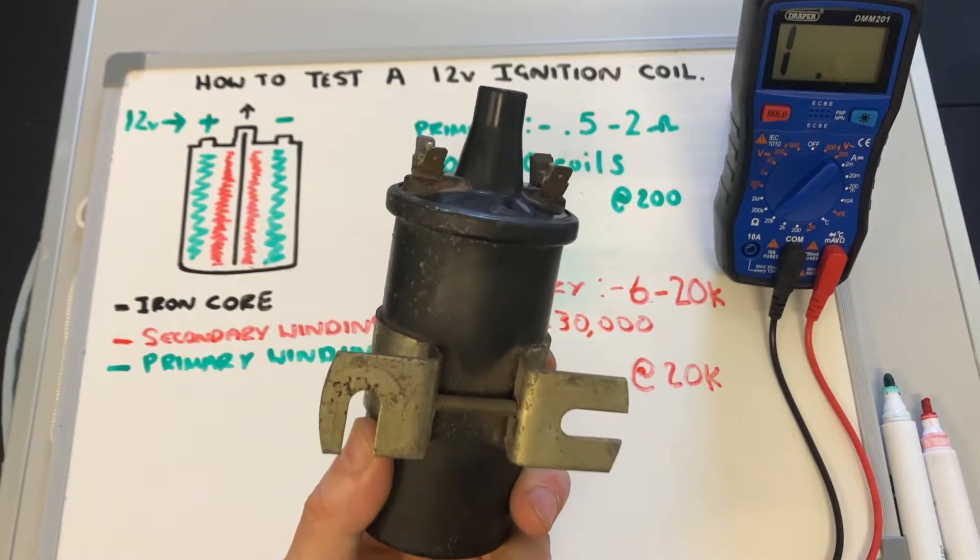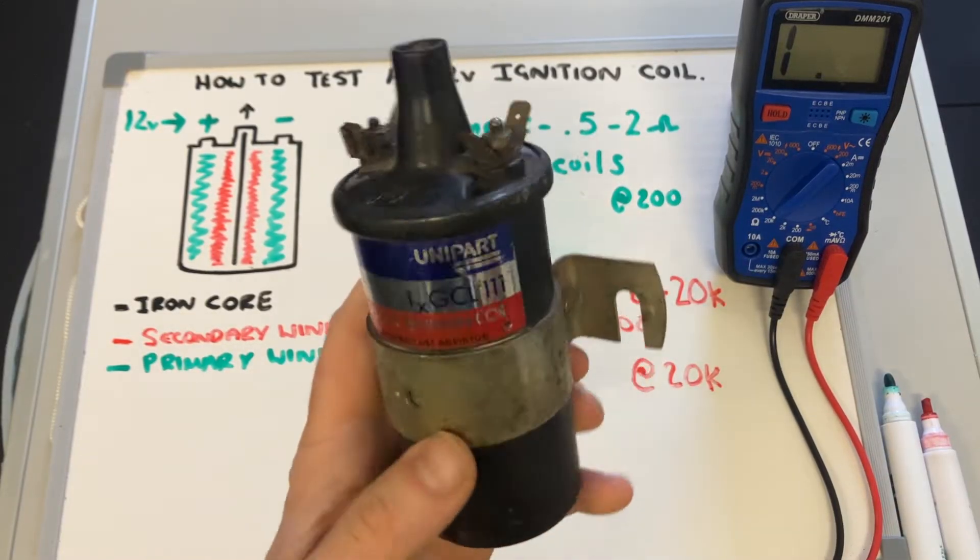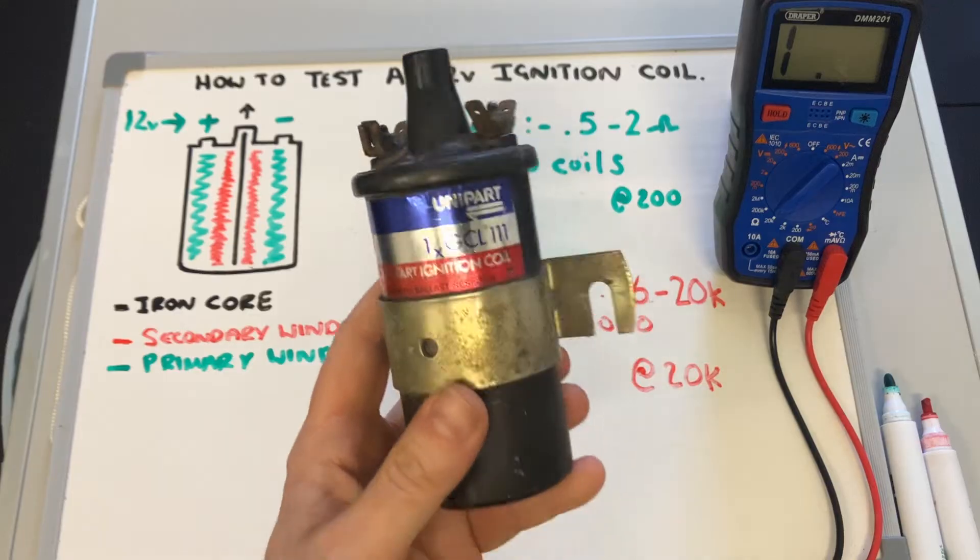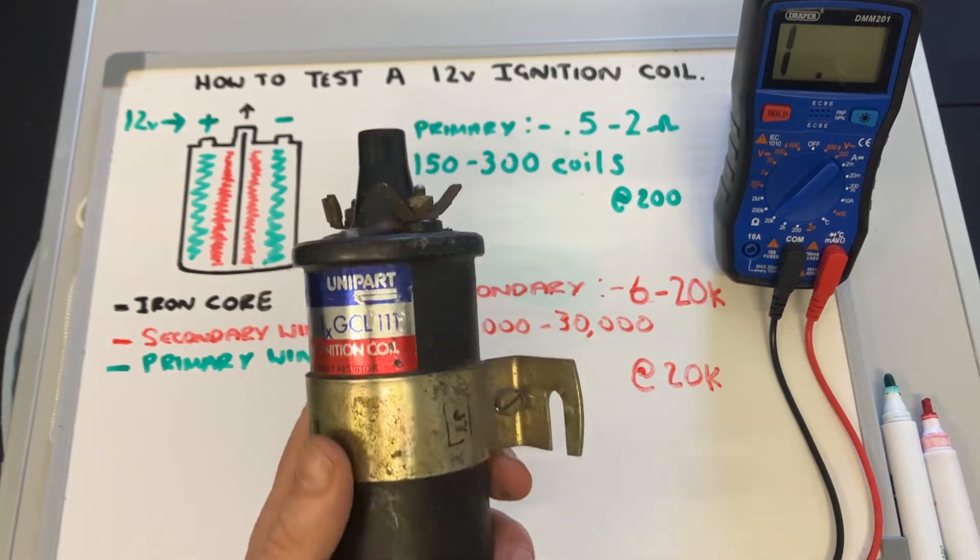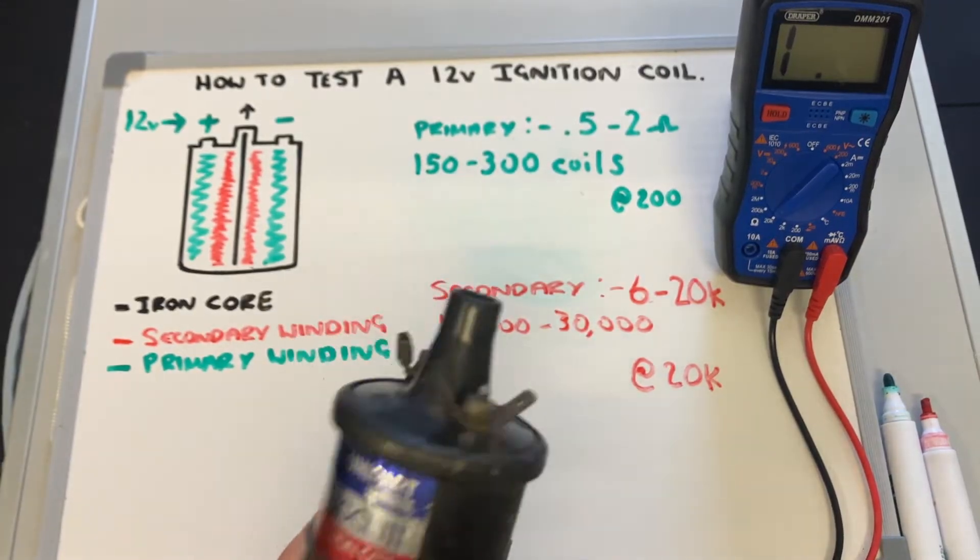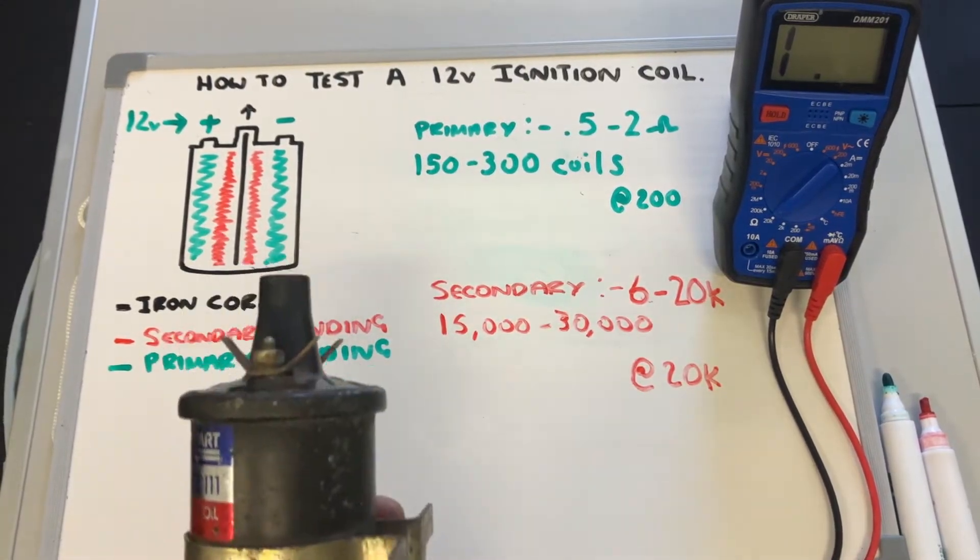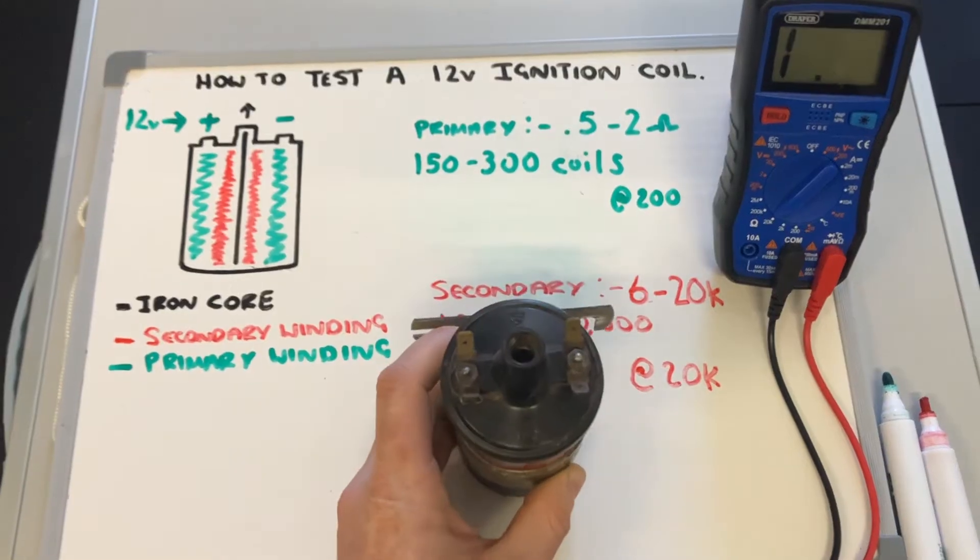It takes the 12 volts from the car battery and amplifies it up to the 15,000 to 20,000 volts that you'd need to fire the spark plug across the spark plug gap in the highly compressed atmosphere of the cylinder. So how does it do that?